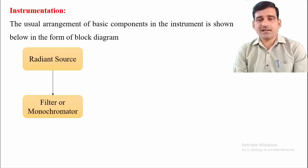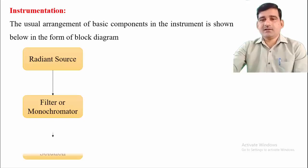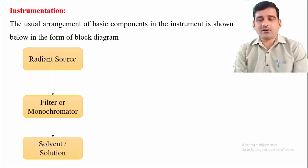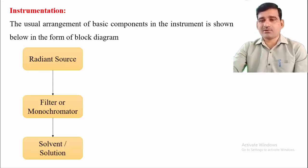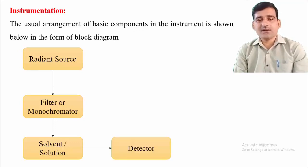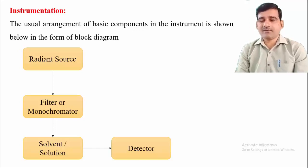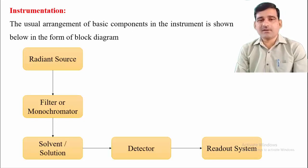Because the radiation source contains polychromatic light, that light must be converted into monochromatic light, and for that we require filters or monochromators. Then this monochromatic light travels through the sample solution or solvent where the actual absorption takes place. The detector then detects how much light is absorbed by the sample and how much light is transmitted.